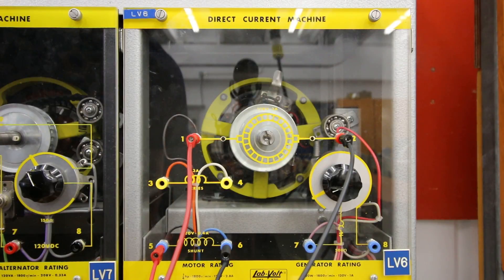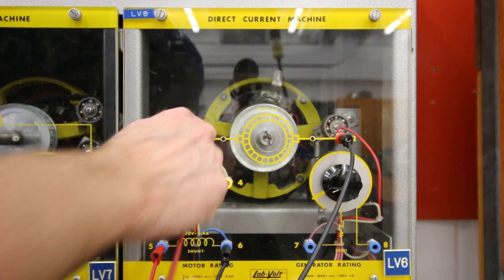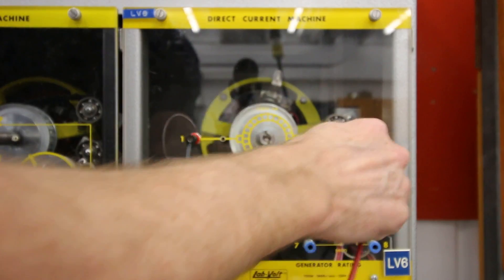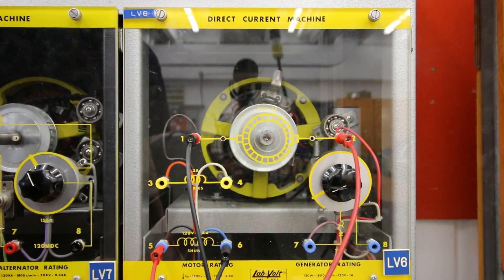If I want to get this guy to go in the opposite direction, all we have to do is just switch our A1 and A2 for our armature, and it goes in the opposite direction.